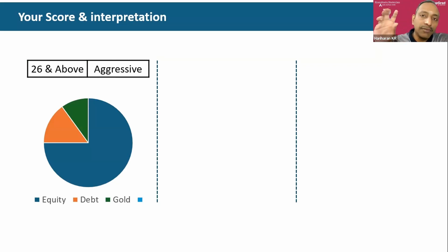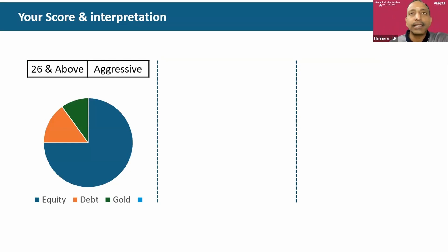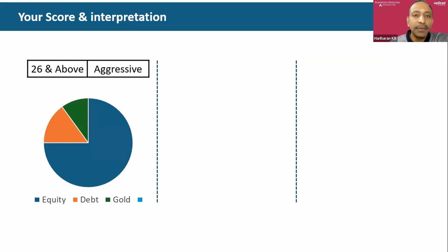It's important to have different asset classes in your portfolio. There are three broad categories one could definitely look at: equities, debt, and gold. I'm keeping real estate aside because buying a first house itself is a challenge for many of us, so from an investment perspective it may not be everybody's cup of tea. But equity, debt, and gold — everybody can participate.